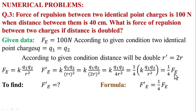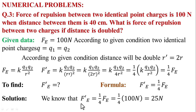Therefore F prime equals (1/4) Fe. Putting in the values: F prime equals (1/4) multiplied by 100 Newton, so F prime E equals 25 Newton. When the distance is doubled from 40 cm to 80 cm, the force becomes 1/4 of the original. The answer for question number 3: F prime E equals 25 Newton.